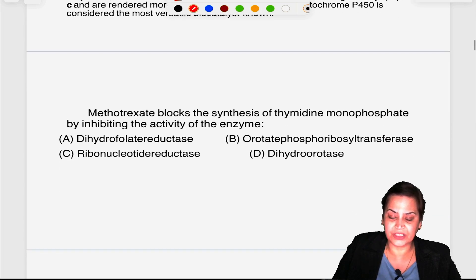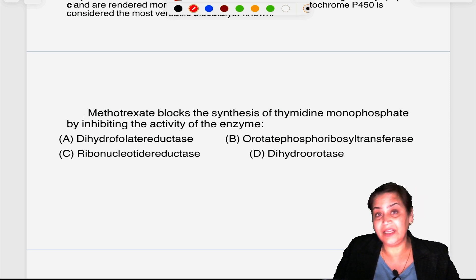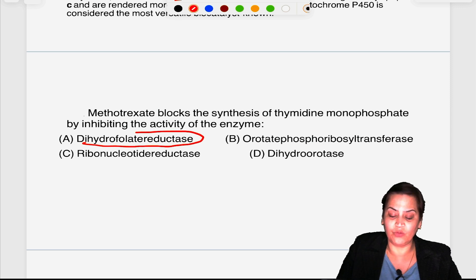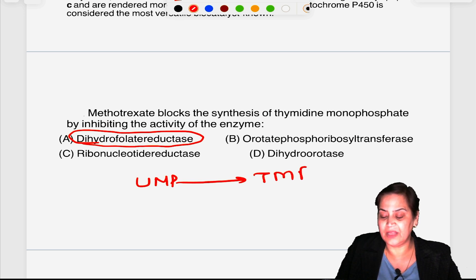Methotrexate blocks the synthesis of thymidine monophosphate by inhibiting the activity of which enzyme? This question is from enzyme inhibition. This is an anti-cancerous drug which is a competitive inhibitor of folate reductase. It is dihydrofolate reductase where uracil is converted into thymine. That methyl group is coming from folate reductase. So the answer will be A.